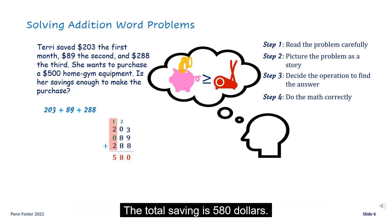The total saving is $580. The gym equipment cost $500, which is less than the total savings. Terry can buy the equipment.